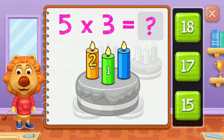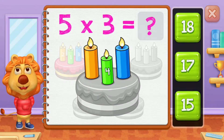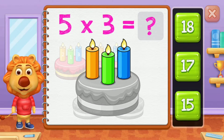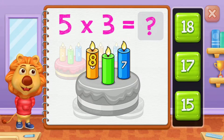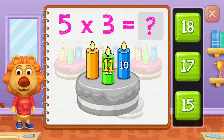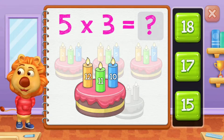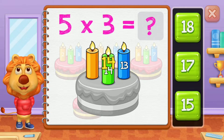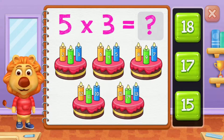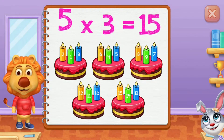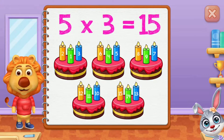One, two, three, four, five, six, seven, eight, nine, ten, eleven, twelve, thirteen, fourteen, fifteen. Five groups of three equals fifteen.